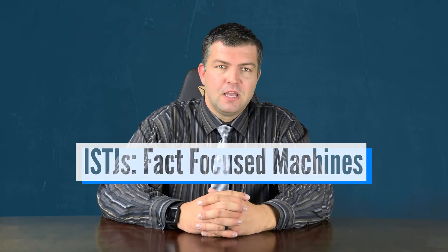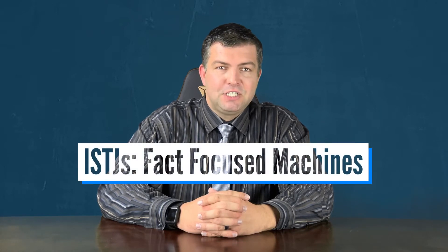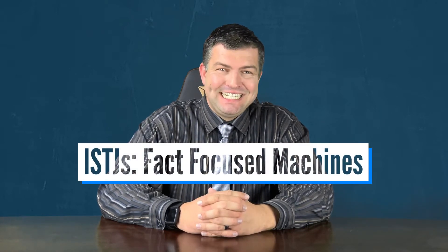Now on to the number one point on our list. Number one, ISTJs are fact-focused machines. ISTJs focus on utilizing their sensing function internally, which leads them to build up a giant storehouse of information that they really rely on when they assess their environments.